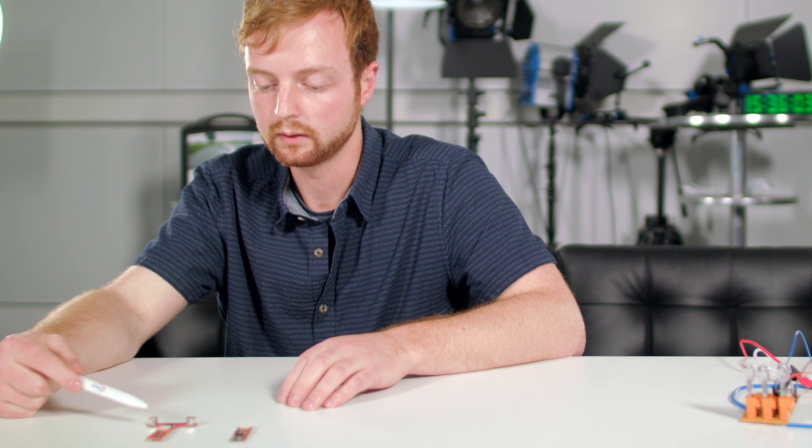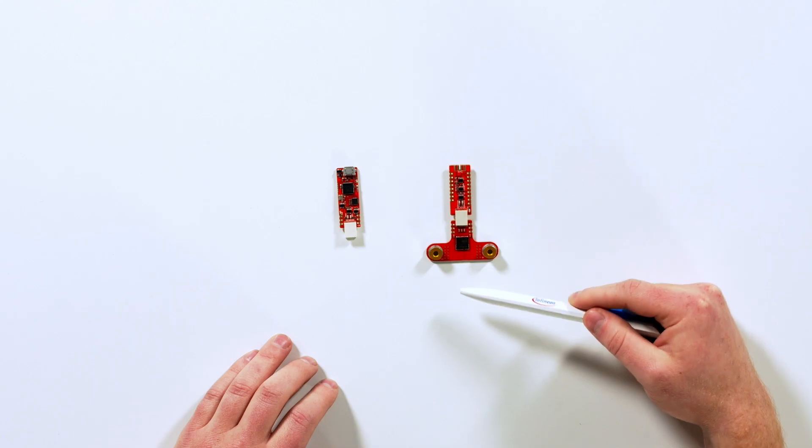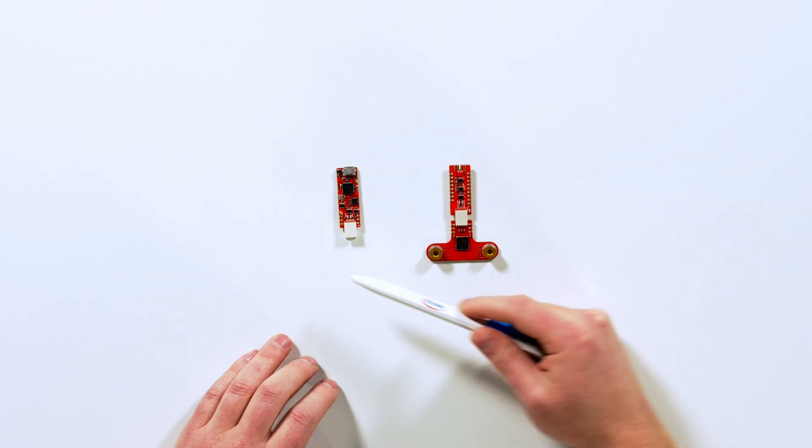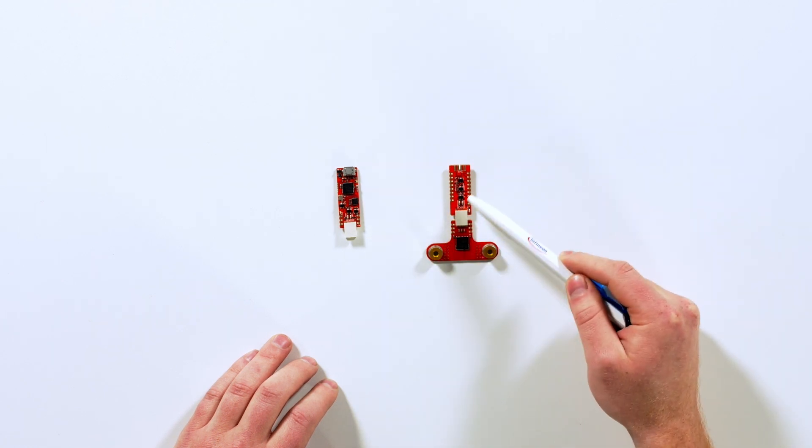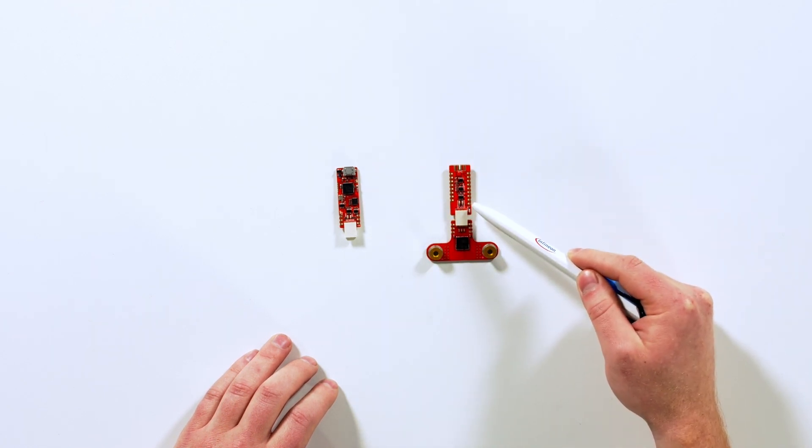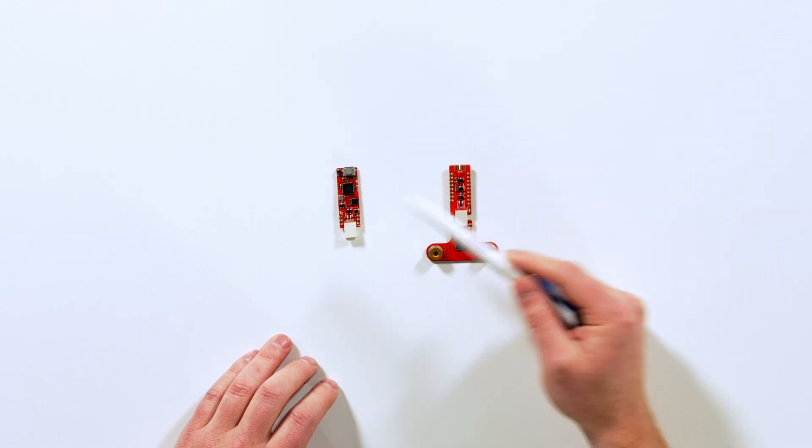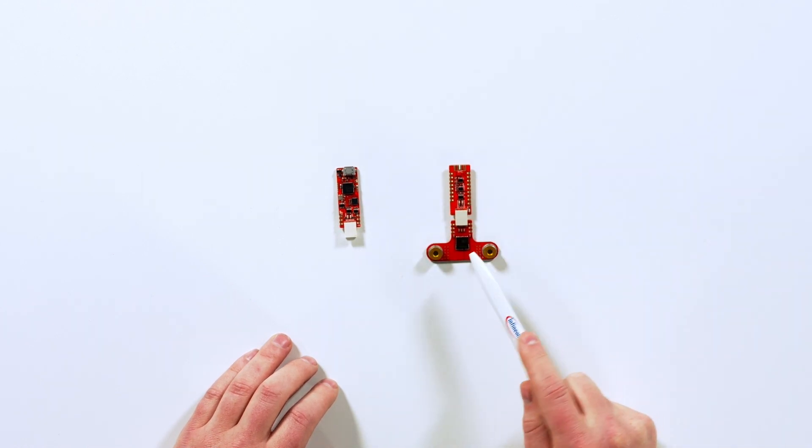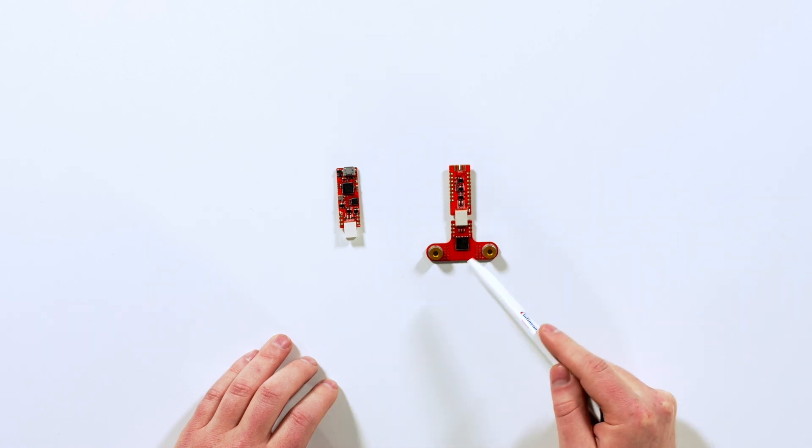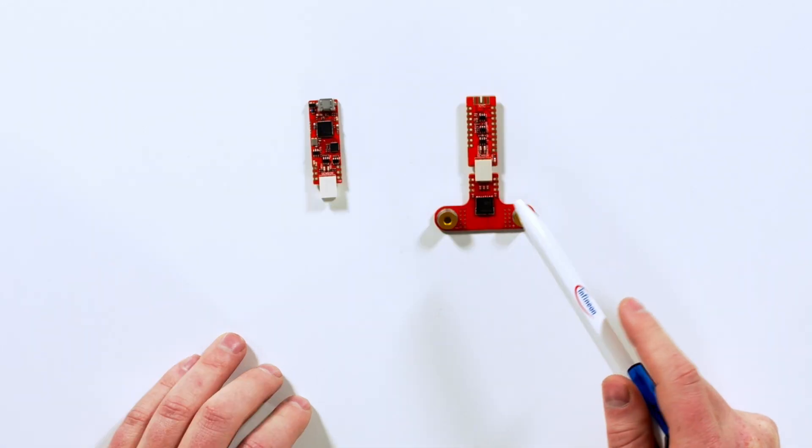The head with the sensor can be detached with this connector here and can be switched to a Shield2Go or to a 2Go kit. Where the sensor is located, there is a copper layer of 140 micrometers and it has these two connectors for the current rail.